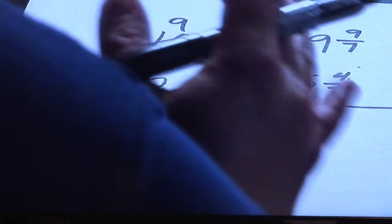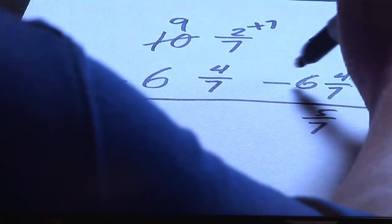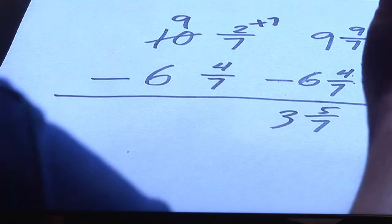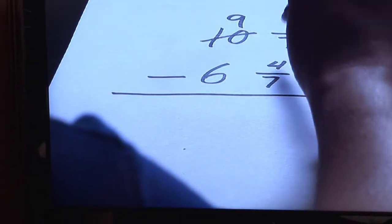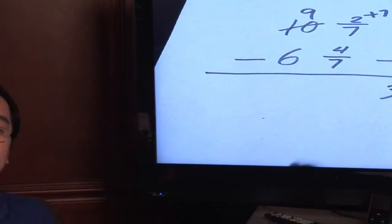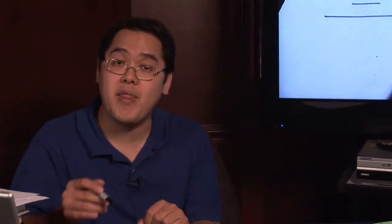And now, and only now, can I subtract the whole numbers. Nine minus six is three. So therefore, ten and two sevenths minus six and four sevenths is three and five sevenths. So I'm Jimmy and that's how you subtract mixed numbers with regrouping.